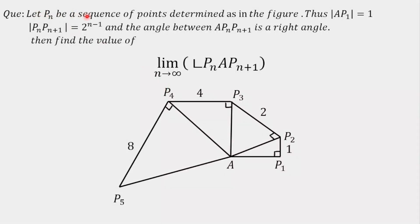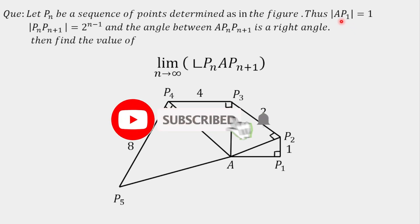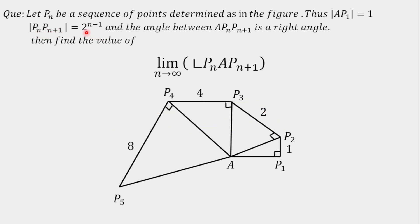Today's question: let P be the sequence of points determined as shown in the figure. AP1 is given as one unit, and the length P(n)P(n+1) is given as 2 raised to the power (n-1). The angle at each vertex is a right angle — every triangle here is a right angle triangle. We need to find the limit as n tends to infinity of the angle formed at the vertex as the sequence keeps increasing from P(n) to P(n+1).